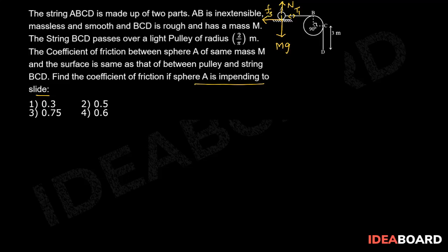Then from the FBD of capital A, we can write normal equal to capital Mg and T1 tension is equal to static friction force. So we can write T1 equal to mu times normal reaction force, which implies T1 is equal to mu times capital Mg.